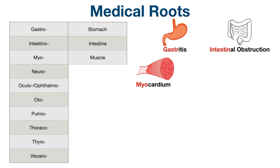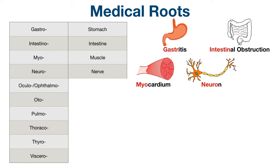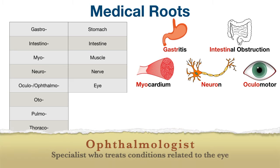Neuro refers to nerves. For example, a neuron is a nerve cell, and neurons are specialized cells that transmit nerve impulses. Next, we have oculo or ophthalmo, which both pertain to the eye. An example medical term is oculomotor, which refers to the movement of the eye, or an ophthalmologist who specializes in treating conditions related to the eye.